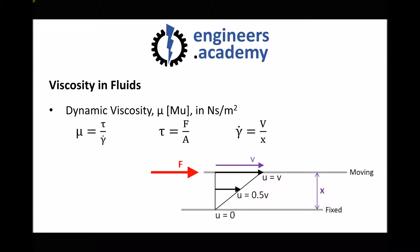The other variable, the shear rate gamma dot, is the velocity of the top plate divided by the distance between the two plates. The shear rate will be greater if the velocity is greater, or if the separation distance is smaller. It's basically a measure of how quickly the top plate is moving in relation to the distance between the two plates. Combining the terms for shear stress and shear rate gamma dot, we get the following formula.